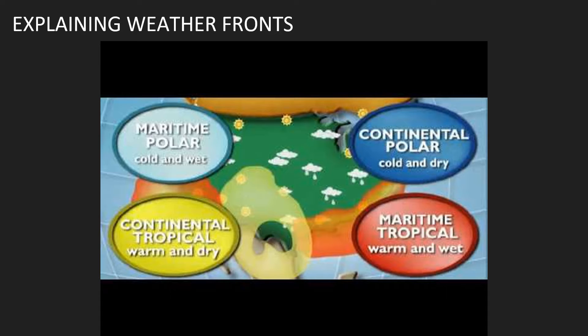Maritime means it's over the water, which means it's going to be wet or moist. Continental means it's over the land and it's dry. Then we have three temperatures: T for tropical, P for polar, and A for Arctic. So we put those together and we have dry and cold, dry and warm, dry and super cold, wet and cold, and wet and super cold. As these come together, one starts to overtake the other — that's where a front is formed.